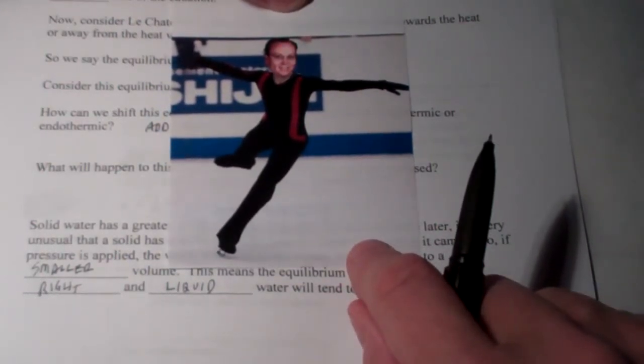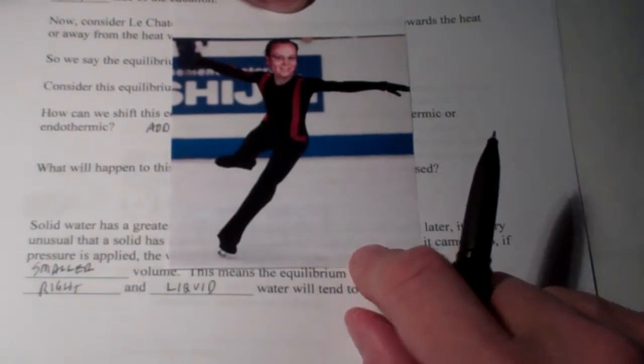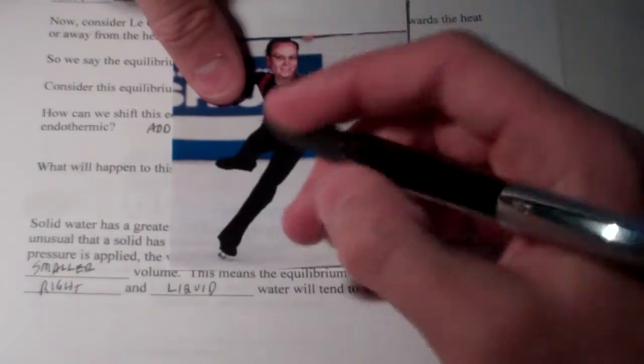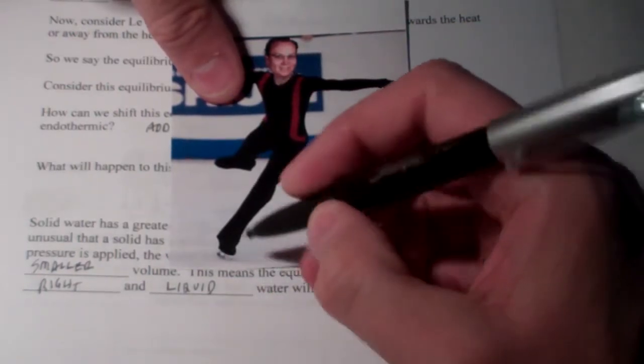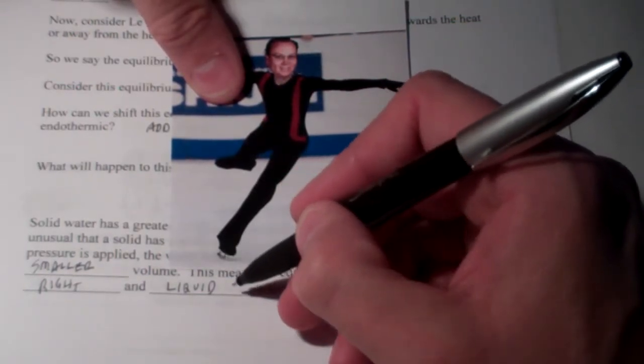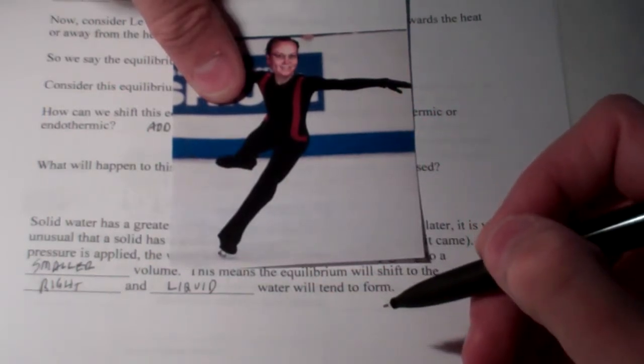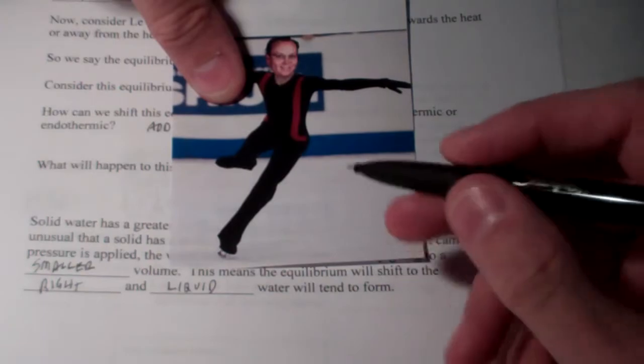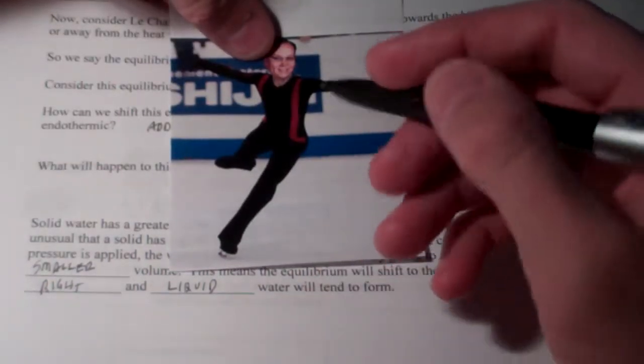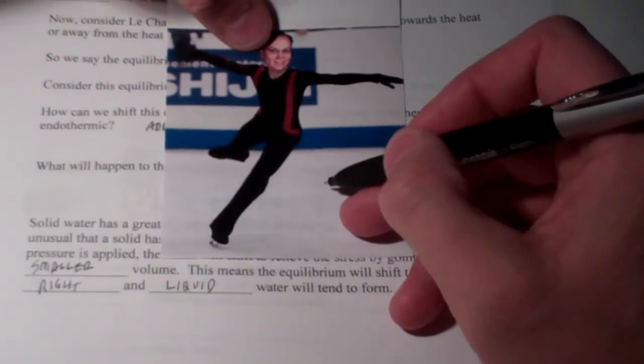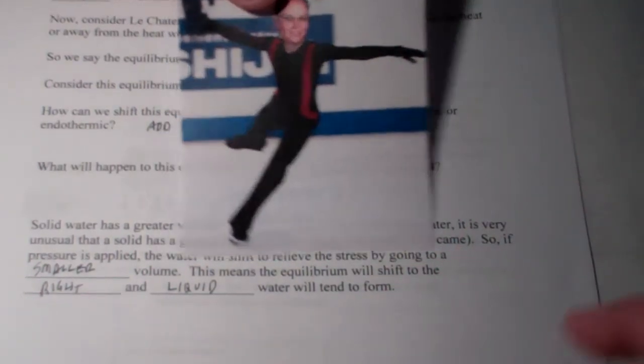If the opposite were true, when pressure were added, if it went to the solid phase, if the solid had the smaller volume, then as pressure was applied to the ice, the ice would not melt. The ice would stay in its solid phase and make ice skating itself quite difficult. But, since water has a smaller volume as a liquid, it makes ice skating possible.